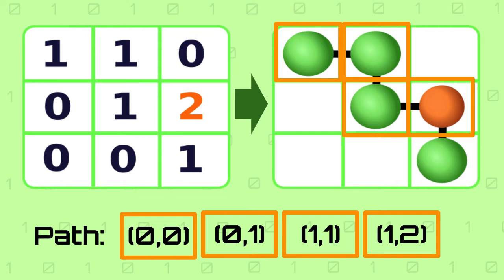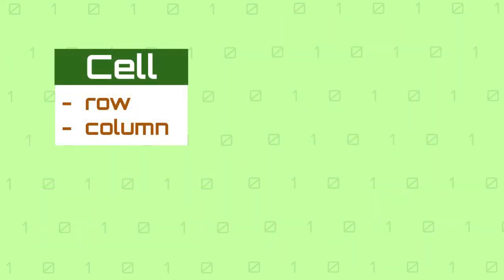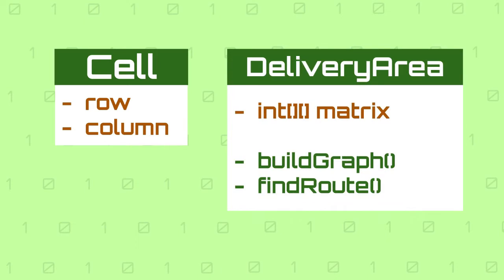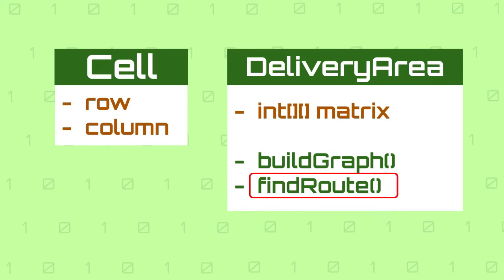Now that we understand the problem, let's see how we are going to organize the code. We will create the class Cell to represent each of the cells in the matrix with a row and column. We will have a class called DeliveryArea which is going to do two things: given a matrix it will convert it to a graph data structure using a method called buildGraph, and then we will have another method called findRoute which will find a path from the start position which is 0,0 to the destination.